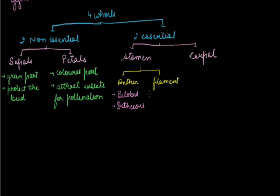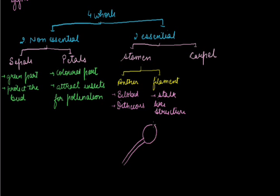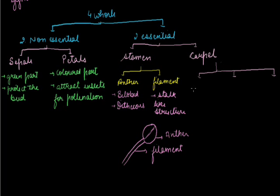Then we talk about the filament. The filament is a stalk-like structure. When we draw the diagram, the anther is on top and the filament is below it. Next, we are dealing with the carpel, which is further divided into three parts: stigma, style, and ovary.